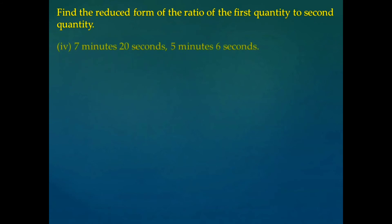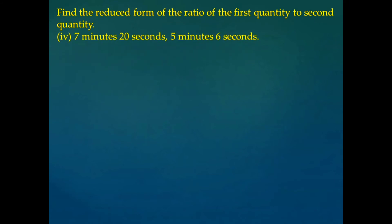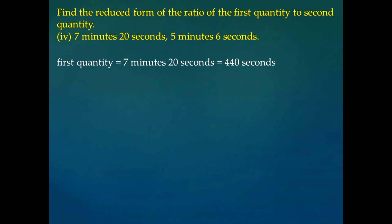Let us consider the next problem: 7 minutes and 20 seconds is the first quantity and the second quantity is 5 minutes and 6 seconds. Here also, we will convert both quantities into seconds. That is, 7 minutes and 20 seconds equals 440 seconds, as 1 minute is equal to 60 seconds. So 7 into 60 is 420, plus 20, we get 440 seconds.